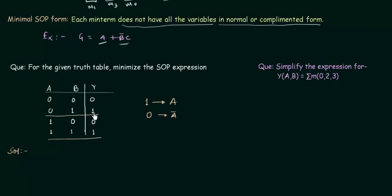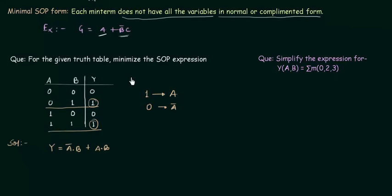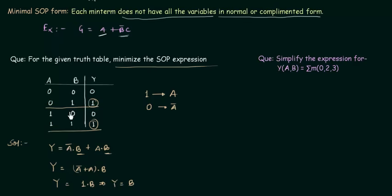There are two cases for which the output is high. For the first case, A is 0 so I write A complement, and B is 1 so I write B. For the last case, A is 1 and B is 1, so simply A and B. Now minimizing using Boolean algebra, I take B as common and I am left with B(A complement + A). Since A complement + A equals 1, this gives Y equals B. We can verify: when B is 0 output is 0, when B is 1 output is 1 — confirming Y equals B.